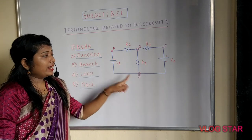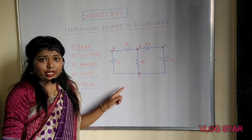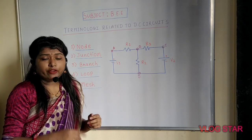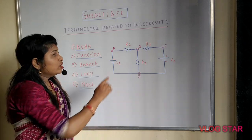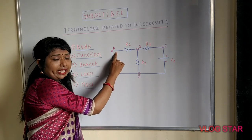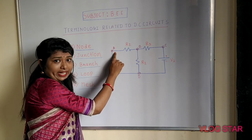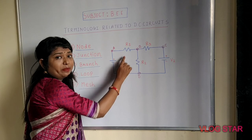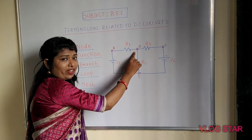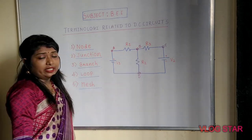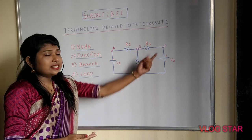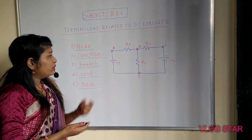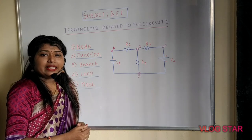To understand the concept of node, let's consider one circuit diagram. In this particular circuit you have to identify which are the node points. Node is a point where two or more circuit elements are joined together. Point A is a node point. Similarly, in this circuit, point A, point B, point C, and point D are the four node points.